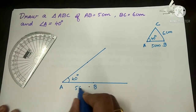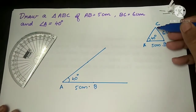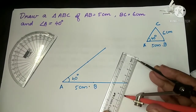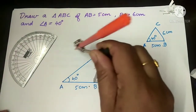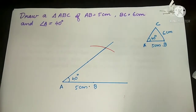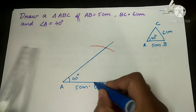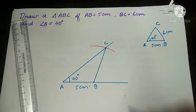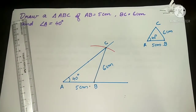From here to here it is 5 cm. Then, to mark a point 6 cm away from B, I take 6 cm in the compass, and by keeping the metal point at B, I cut an arc. To get the required triangle, I draw a line from B to the point of intersection, mark this as point C, and this side BC is 6 cm. So this is our required triangle.